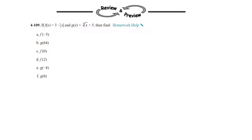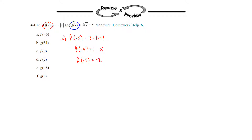If f of x equals 3 minus the absolute value of x, and g of x equals the cube root of x plus 5, then find some different values of each of the functions. Make sure you're paying attention — there is an f of x function and a g of x function, so you've got to make sure you're plugging into the correct one. The first one is a, which is f of negative 5. You're going to plug in negative 5 wherever there is an x. So f of negative 5 is equal to 3 minus the absolute value of negative 5, which is 5, and therefore f of negative 5 is equal to negative 2.